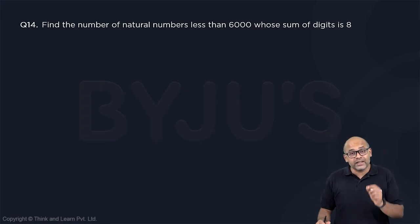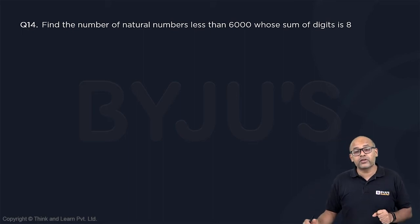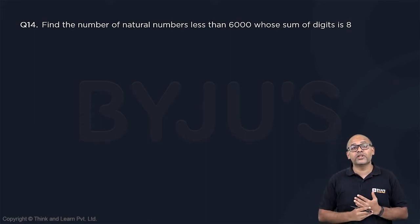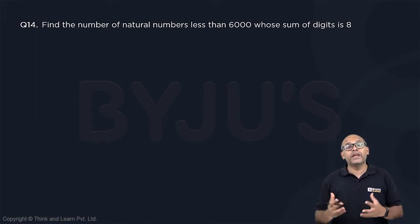Next, again a theta question. This is a very beautiful question on P and C. You need to find all the natural numbers less than 6,000 whose sum of digits is 8. It is not a numbers question. This is a disguised P and C question.